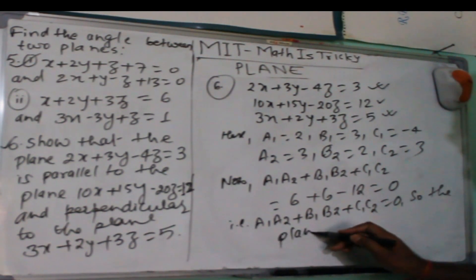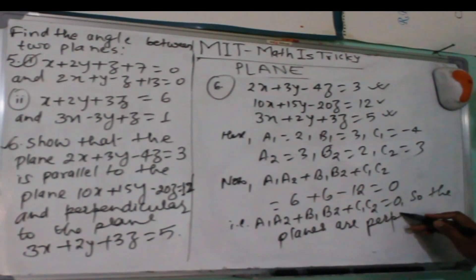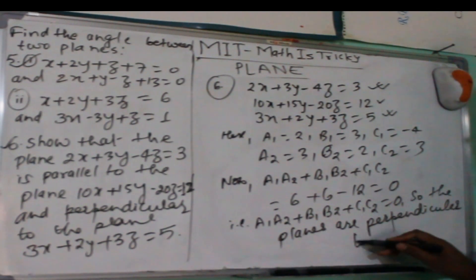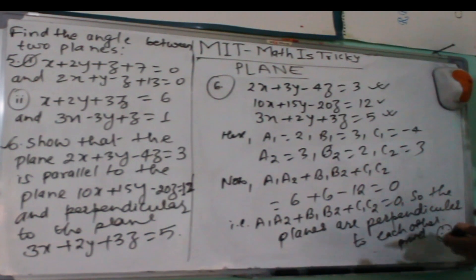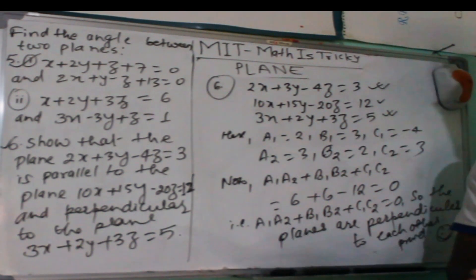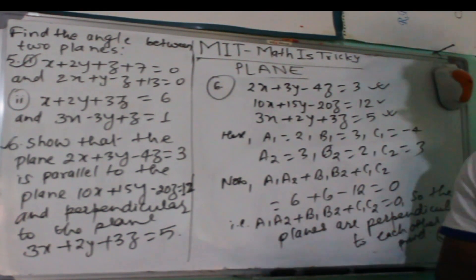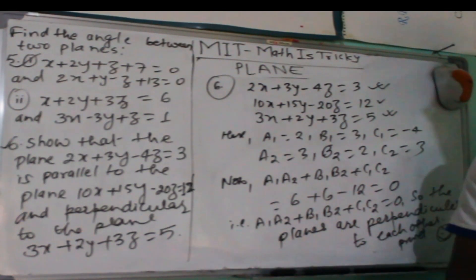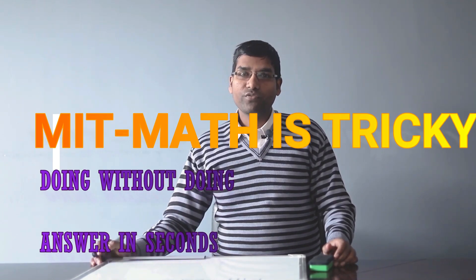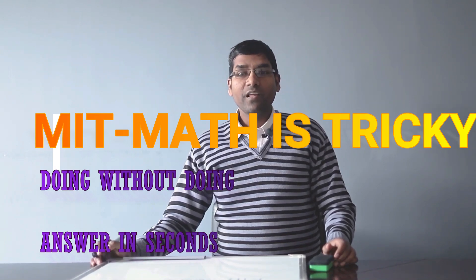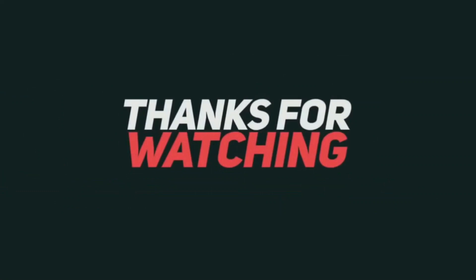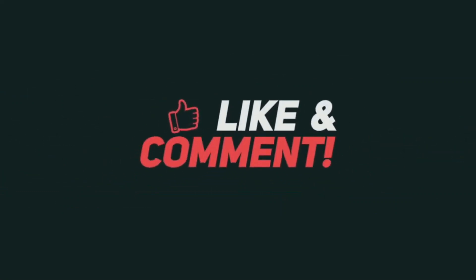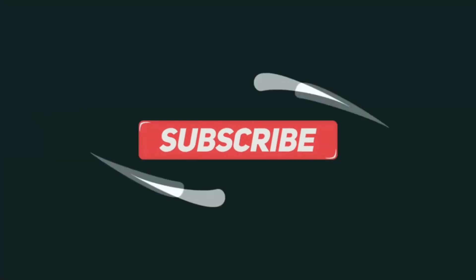For the second part, checking if planes 1 and 3 are perpendicular: A₁A₂ + B₁B₂ + C₁C₂ = 2(3) + 3(2) + (-4)(3) = 6 + 6 - 12 = 0. Therefore the planes are perpendicular to each other — both parts proved. Thank you so much, hope you understood. Please share any confusion in the comments, subscribe to the channel.